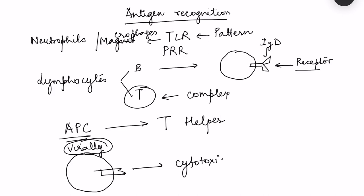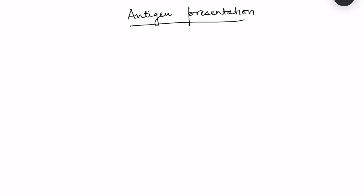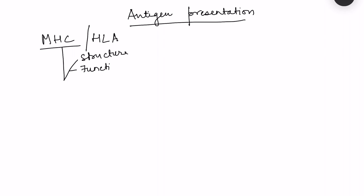Let us see the details of antigen recognition and antigen presentation to helper T cells and cytotoxic T cells. For antigen presentation, a complex of proteins is required known as MHC - the major histocompatibility complex - also known in humans as HLA (human leukocyte antigen), so named because it was first found on leukocytes. These MHC proteins are broadly classified into two types: MHC1 and MHC2, based on structure, function, and cellular distribution.